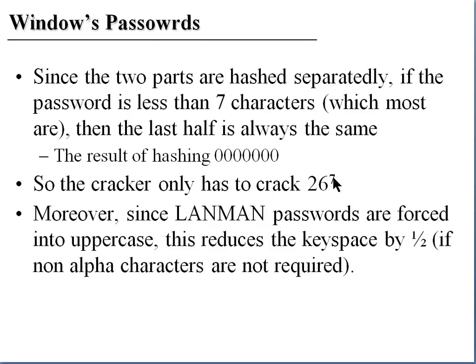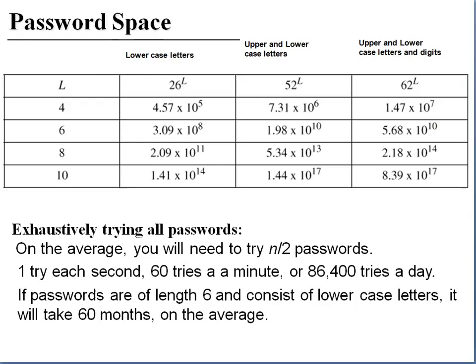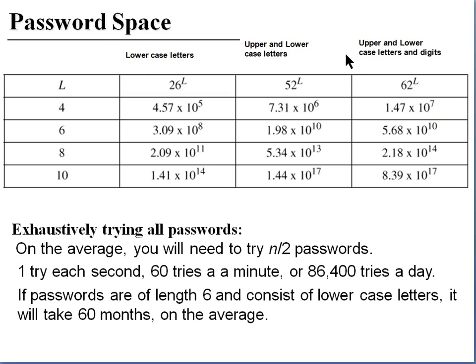The Windows NT password works differently and is much stronger than the LAN Manager password. NT passwords are first converted to Unicode, and then a hash — MD4 — is used to produce a 16-bit one-way hash. Looking at the password space table depending on password length L: using only lowercase letters it's 26^L; upper and lower case is 52^L; upper, lower case and digits is 62^L — not including special characters. As the required character count increases, the password space increases dramatically, as does using lower and upper case letters with digits.